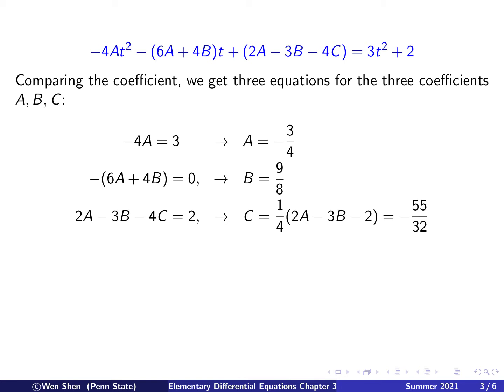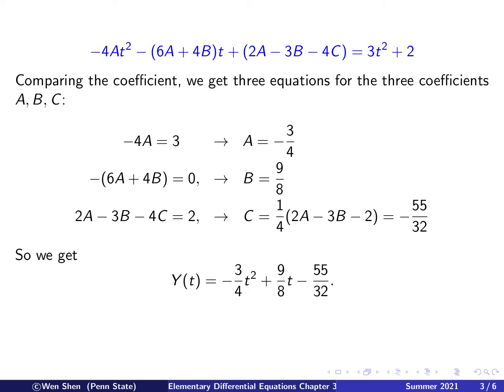We are lucky here that this system is triangular, so we can solve it sequentially. The first equation contains only A; we immediately get A equals negative 3 over 4. Plugging that into the second equation, B is the only unknown and we solve for B. Once we have A and B, we substitute into the third equation and solve for C. You may pause and work out the details. Then plugging in A, B, and C gives us the particular solution.